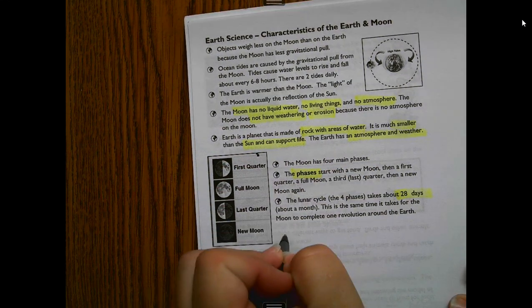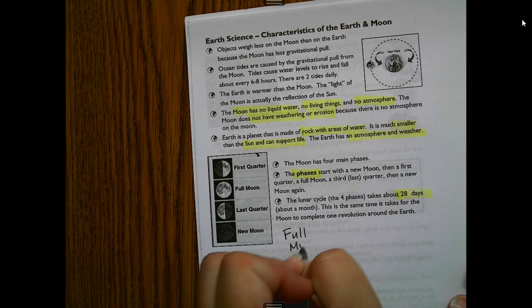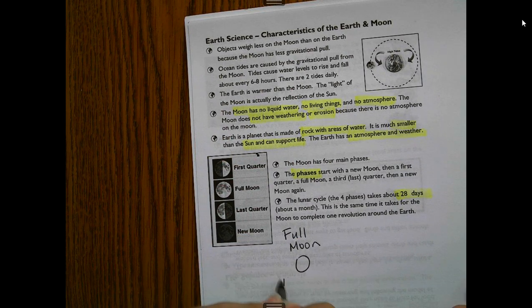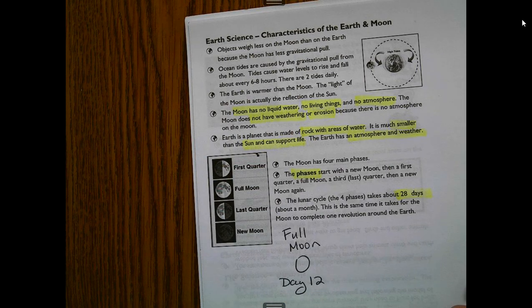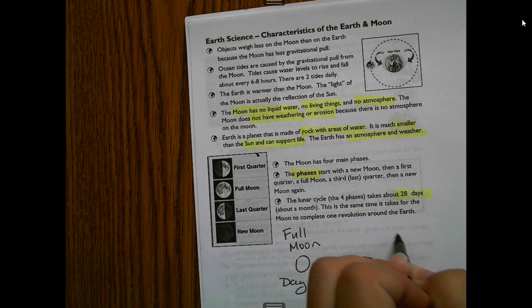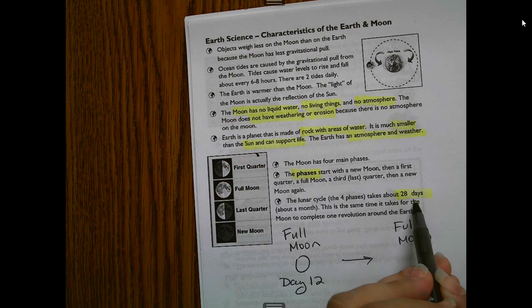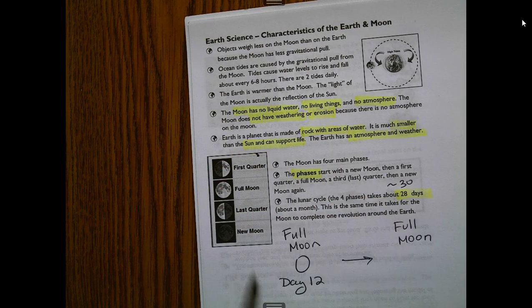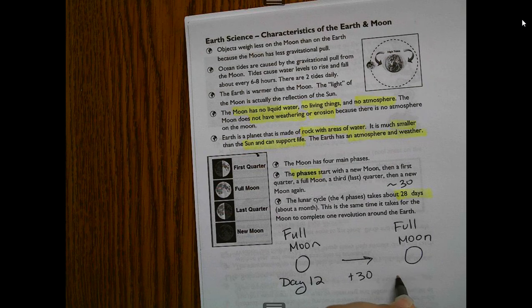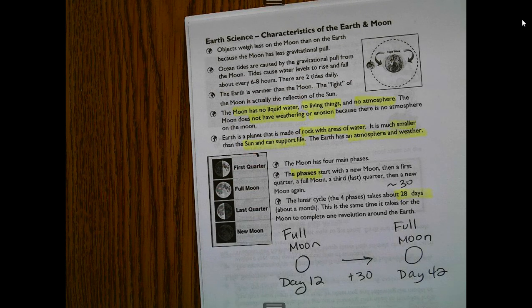For moon phase timing: the cycle takes about 28 days — we round up to about 30. So if I have a full moon on day 12, the next full moon would be on day 42. Whatever phase you're starting with, add about 30 days and that's when you can expect that same phase to show up again.